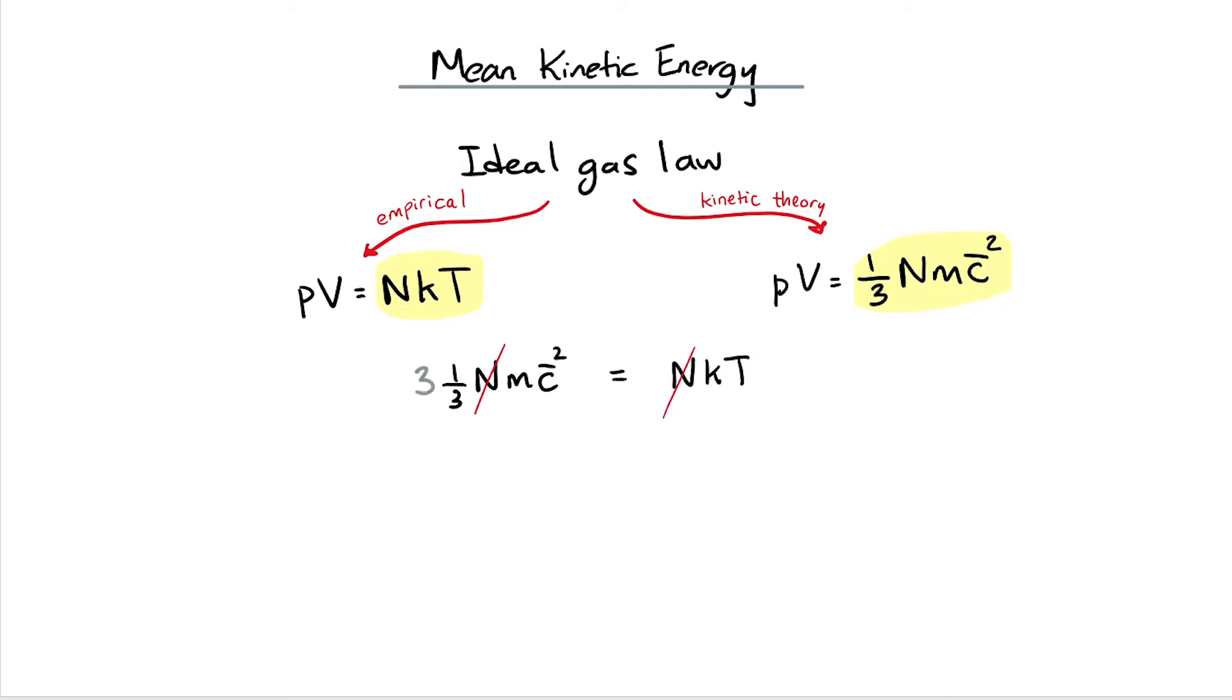Get rid of the one-third by multiplying both sides by three. I will now also multiply both sides by a half. The left-hand side should now remind you of kinetic energy: half times mass times velocity squared.